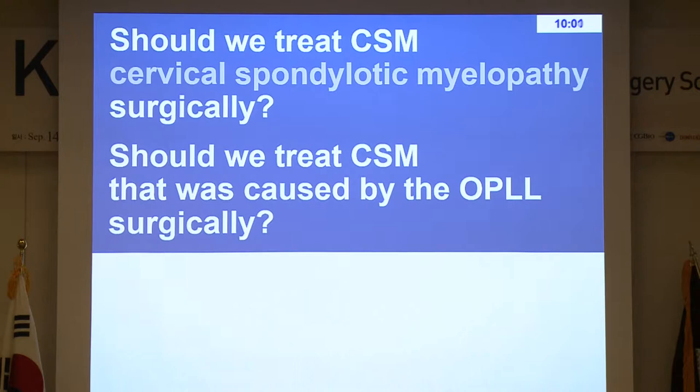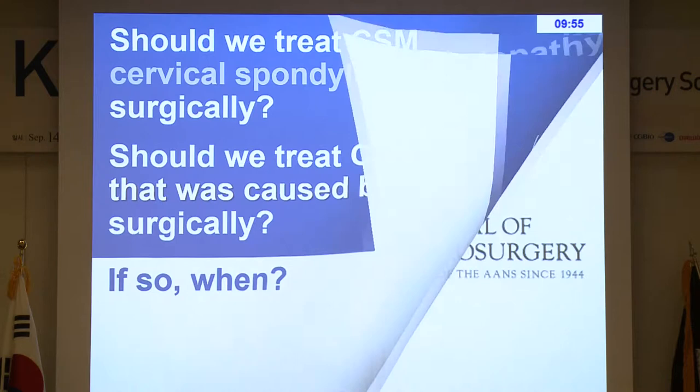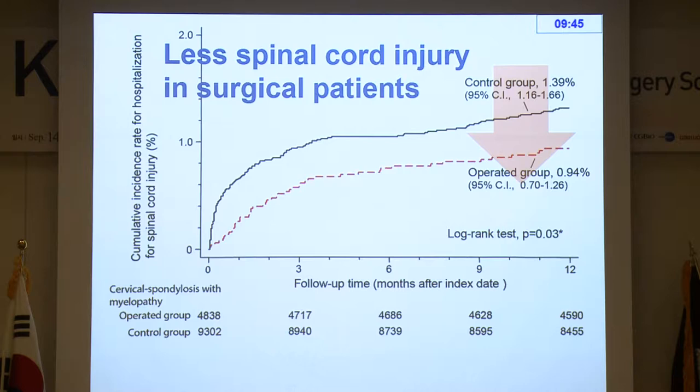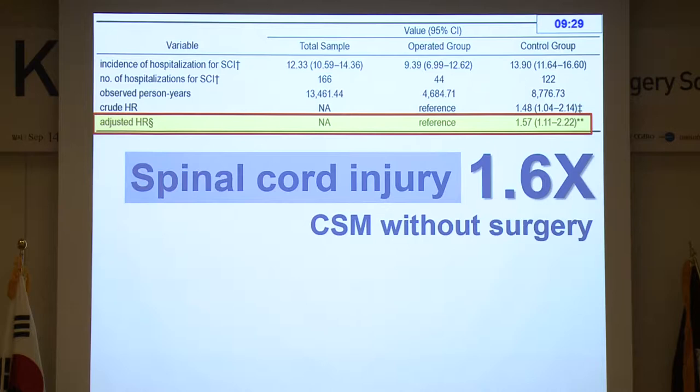If so, when should we do the surgery? We used the National Insurance Database to conduct this study. We looked at patients who had cervical spondylotic myelopathy and had surgery. After surgery, the incidence of spinal cord injury decreased. Managing cervical spondylotic myelopathy without surgery increases the spinal cord injury rate by 1.6 times — that's the adjusted hazard ratio.